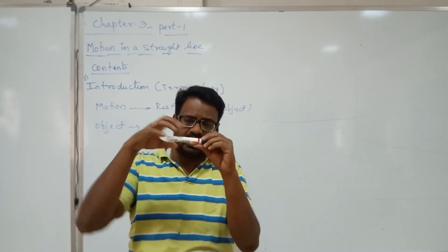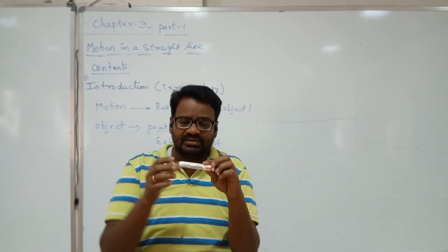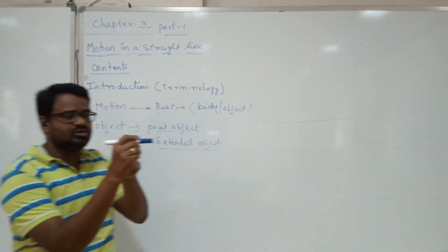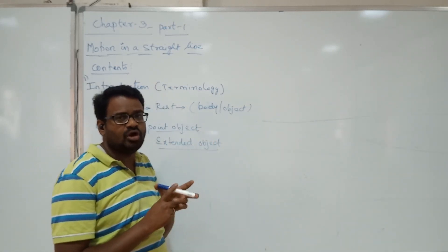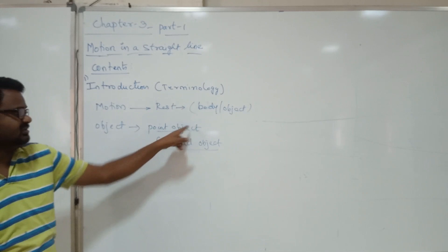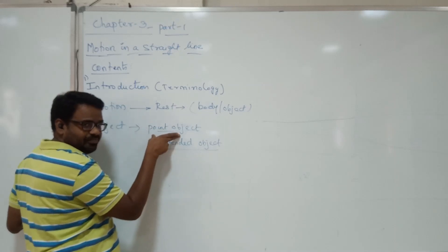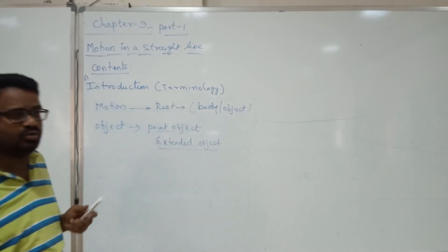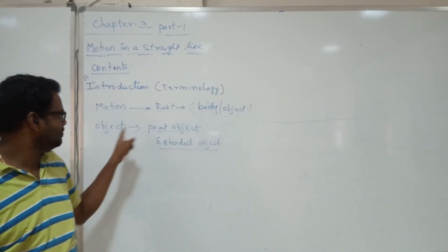So this marker is a combination of many point objects. A physical body under study is either a point object or an extended object. In physics, we initially start with point objects for the first few chapters, and later we move to extended objects — dealing with how various extended things undergo motion or remain at rest.